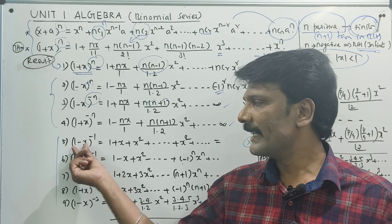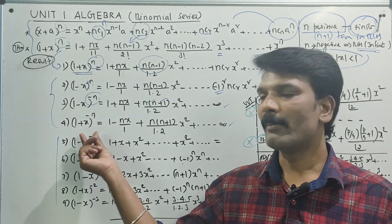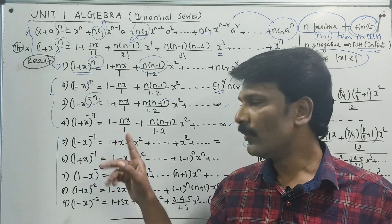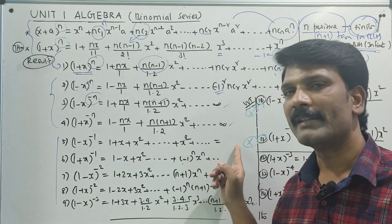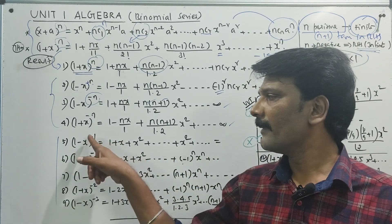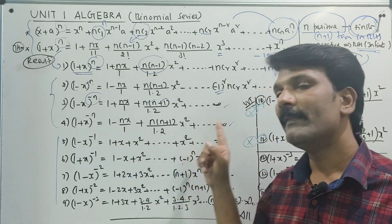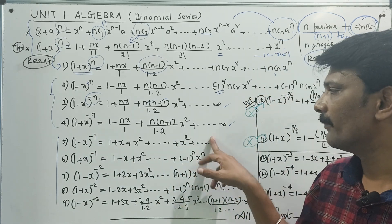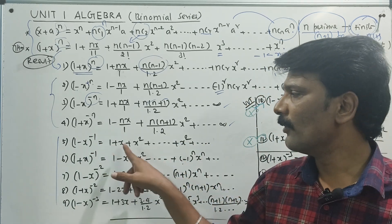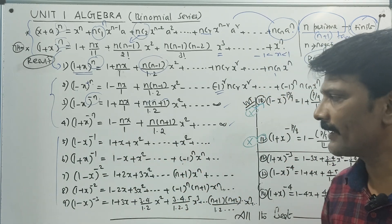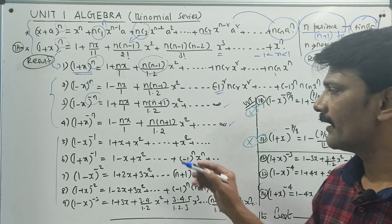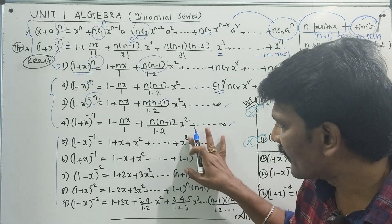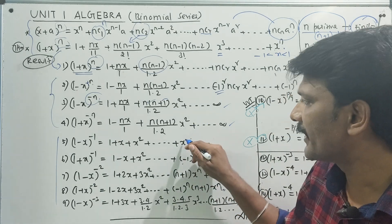So 1 minus x whole power minus 1: the power minus means infinite terms, same sign. This equals 1 plus x plus x squared plus x squared plus x power n, and so on.